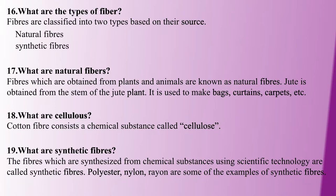Next question: What are the types of fiber? Fibers are classified as natural fibers and synthetic fibers. Natural fibers come from plants and animals — for example, jute, from the jute plant stem, is used for bags, curtains, and carpets. Cotton fiber's chemical substance is cellulose. Synthetic fibers are produced using natural chemical substances with scientific technology. Examples of synthetic fibers are polyester, nylon, and rayon.